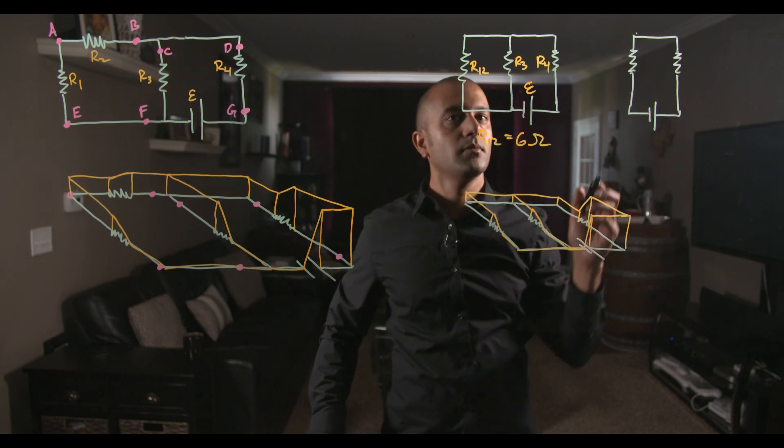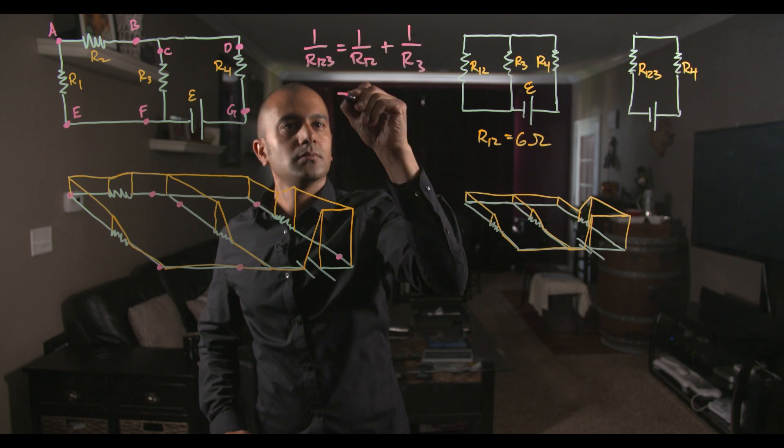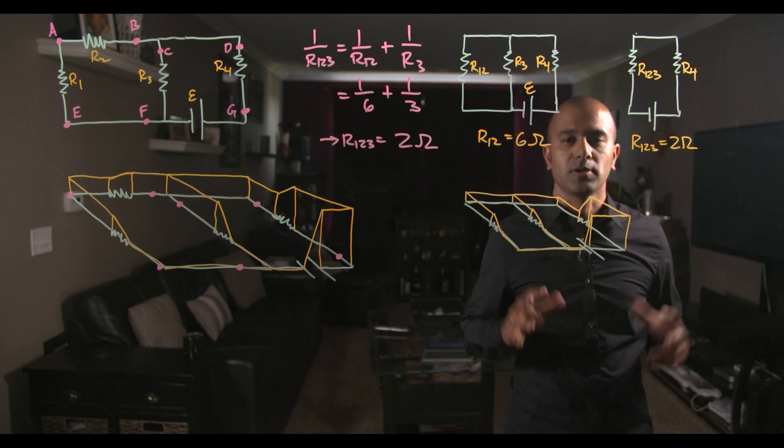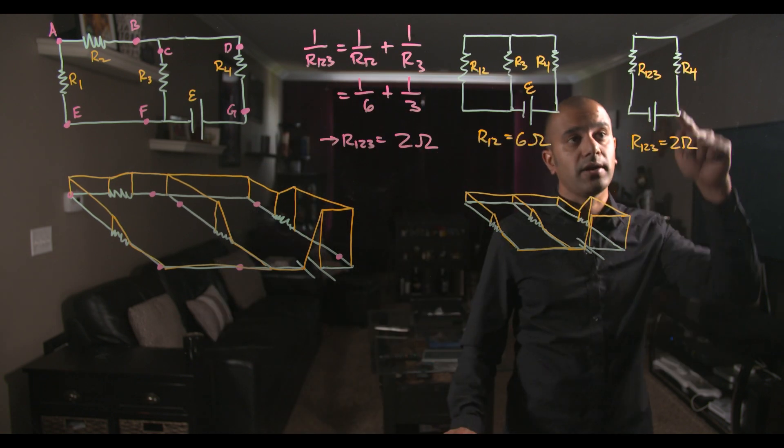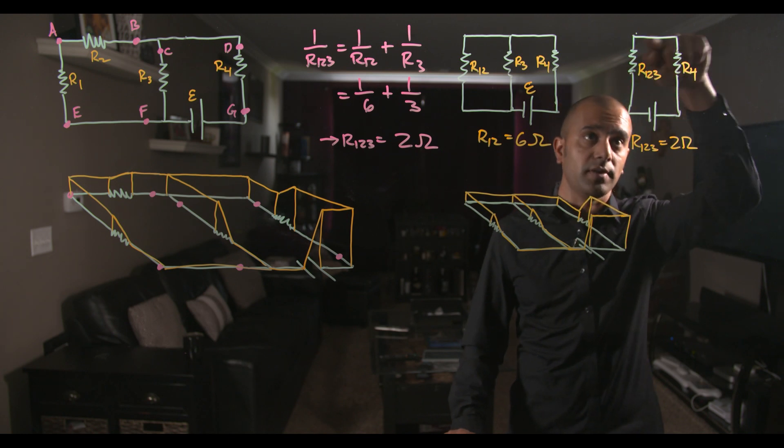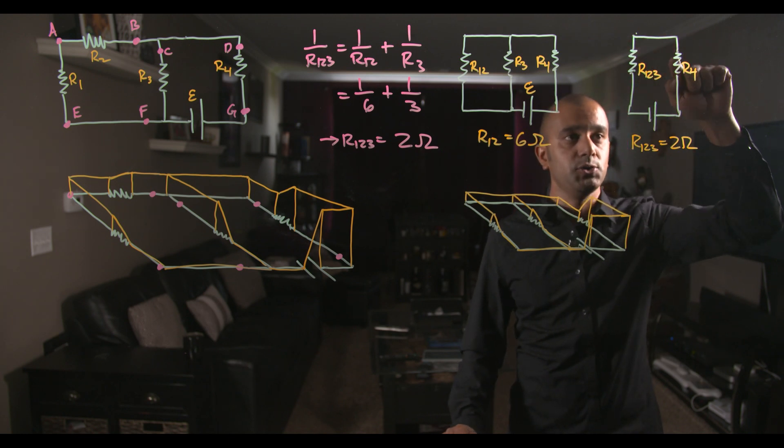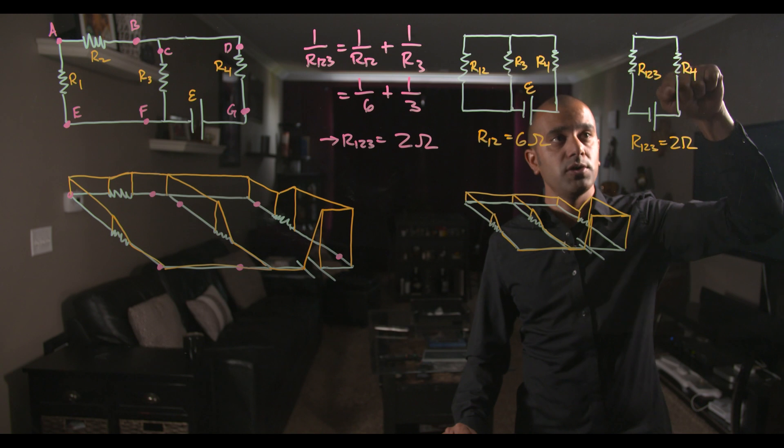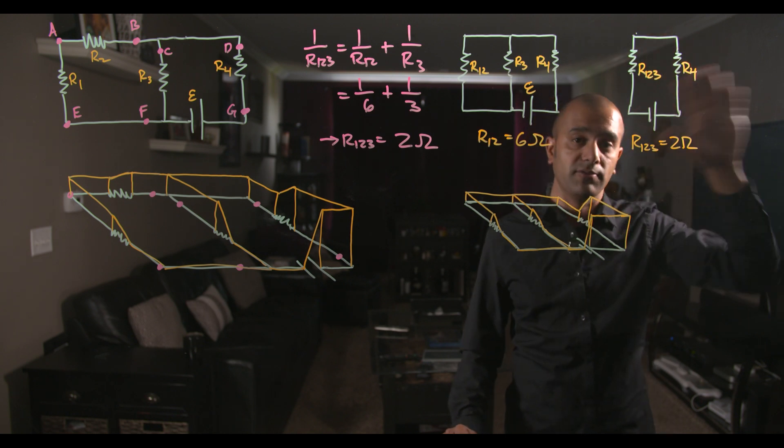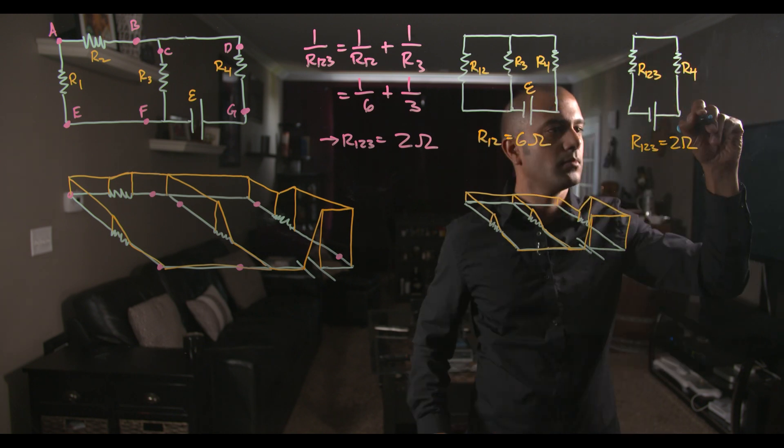So to combine these, we have to combine R12 and R3 using the parallel law. And then finally, R123 and R4 are in series because they're on the same branch. In other words, you can get from R4 to R123 without crossing any forks in the circuit. So we'll combine those in series.